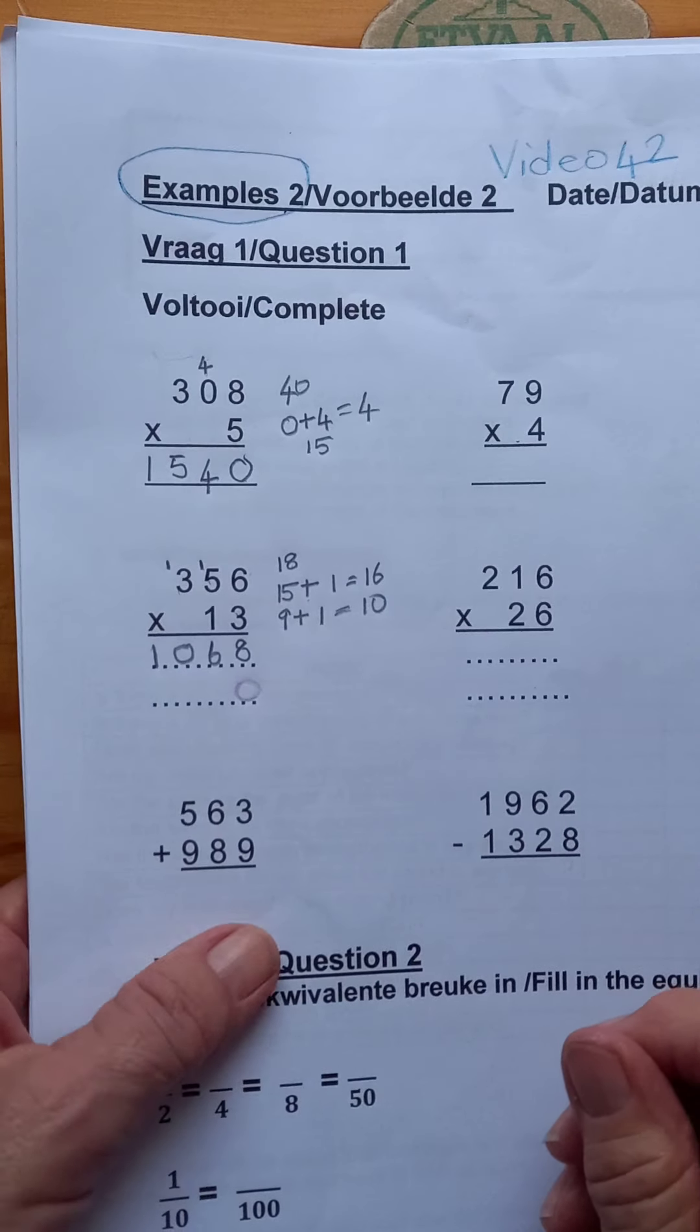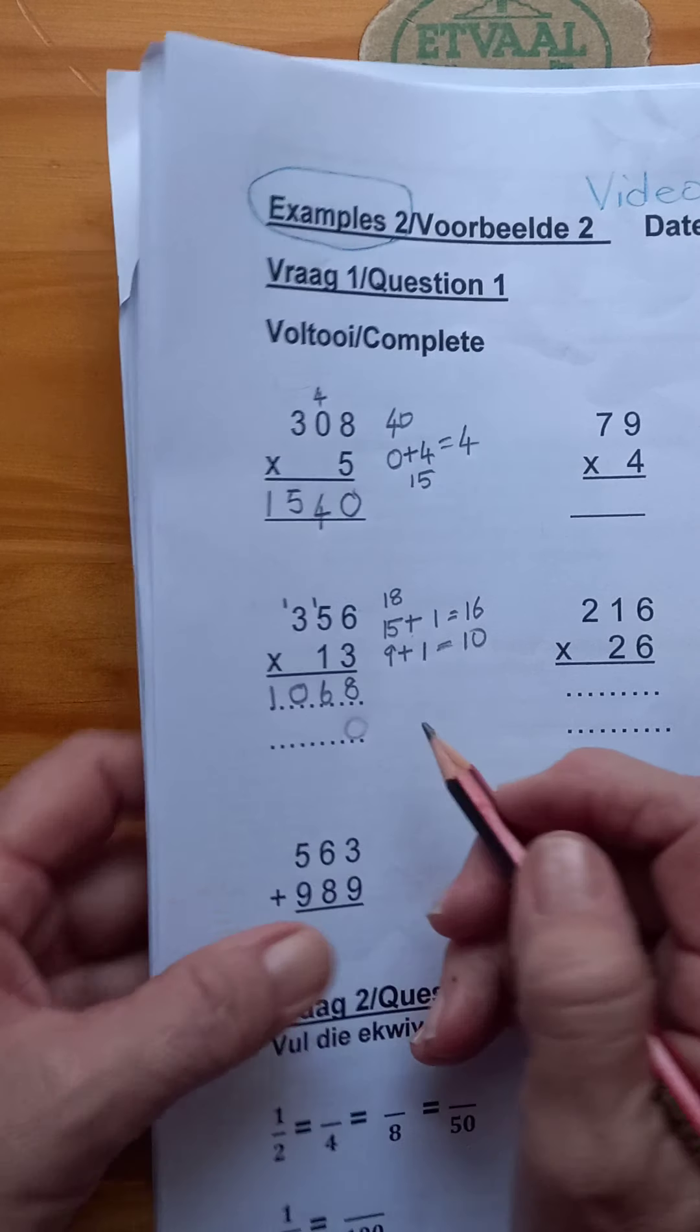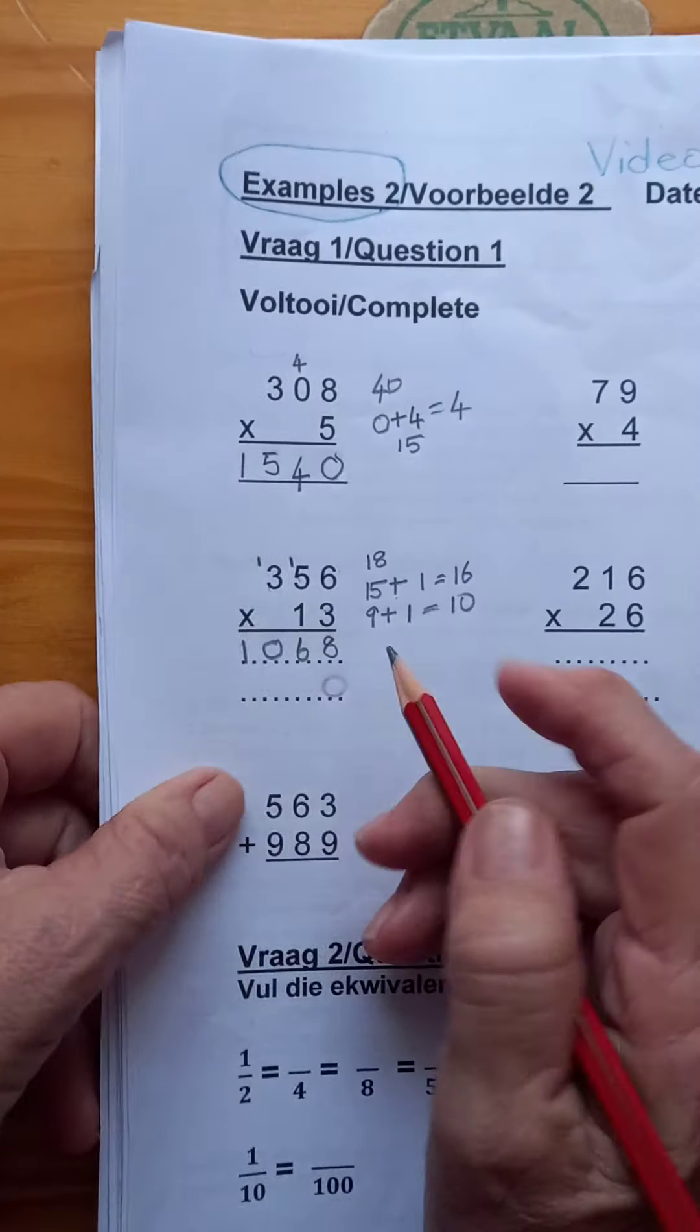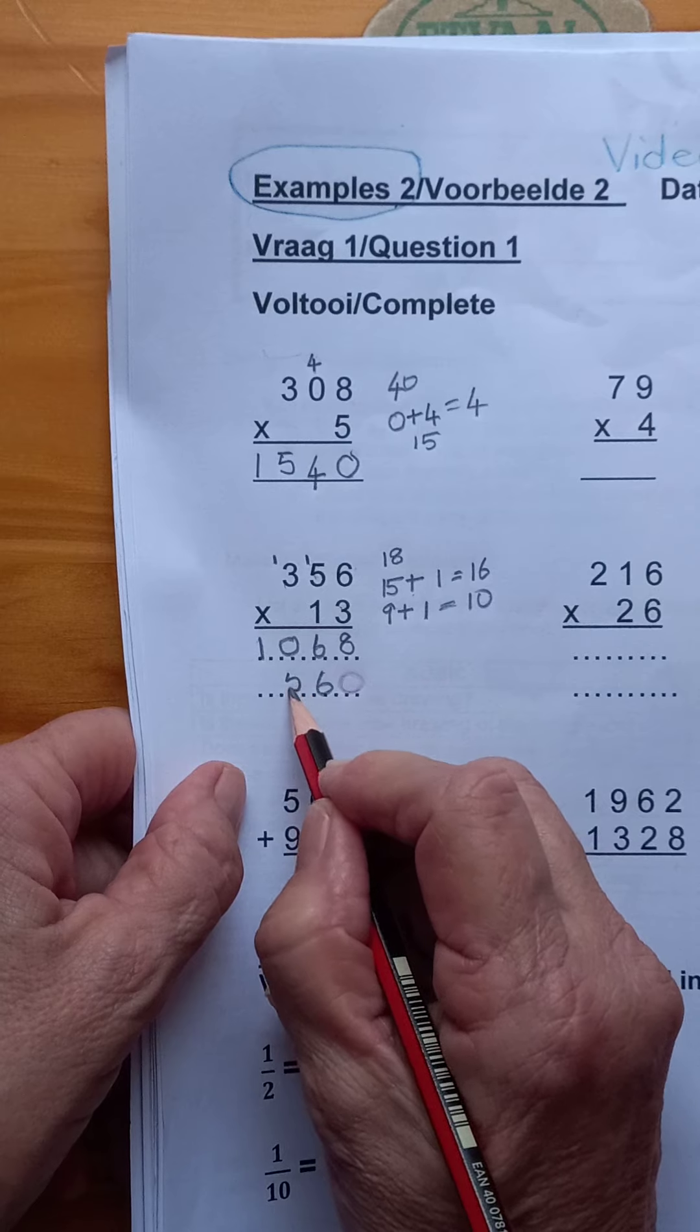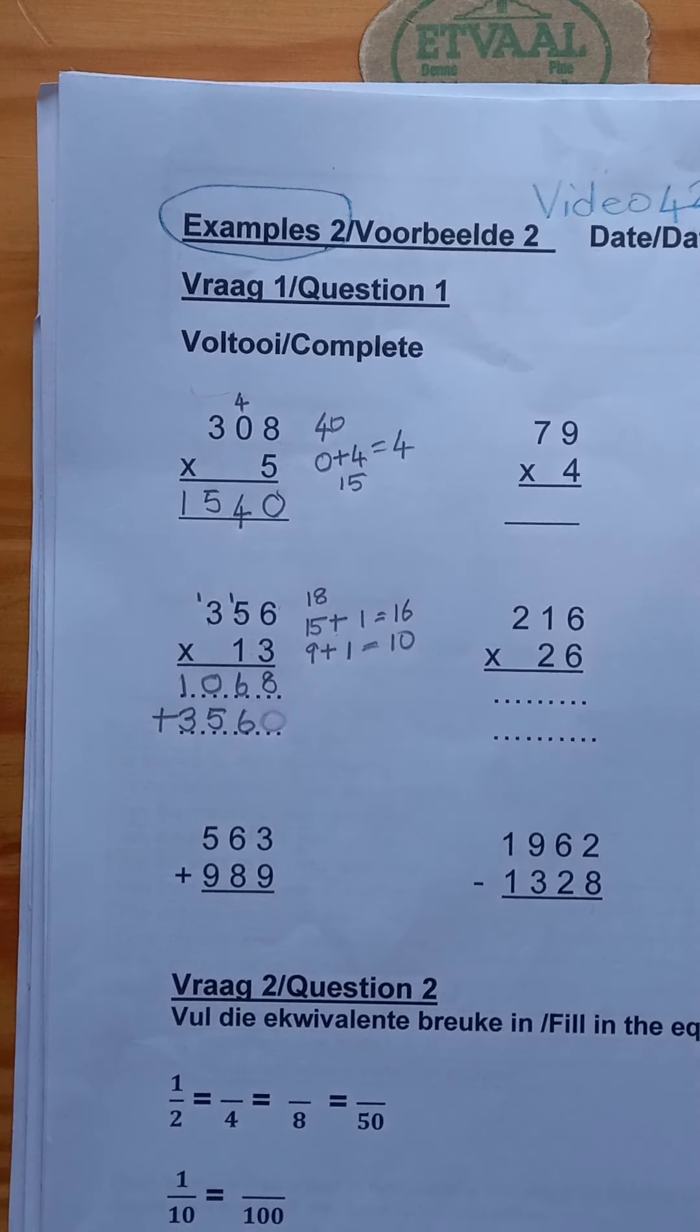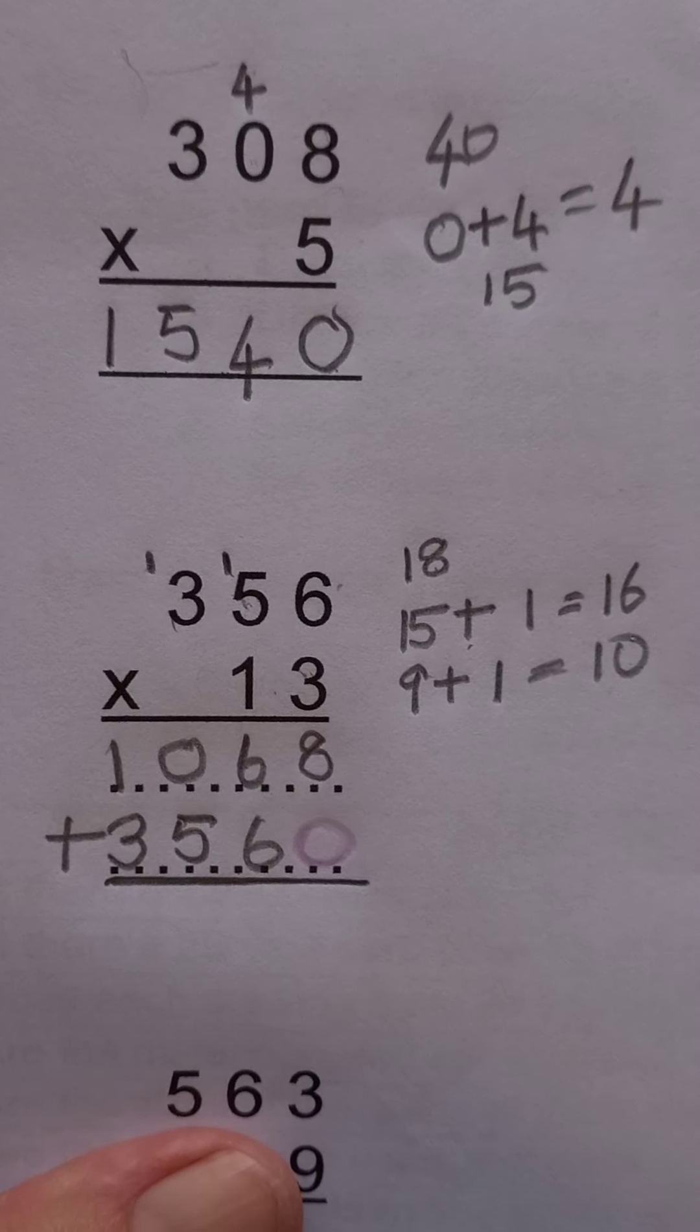Can you understand why we've done all these sums, times 1 and times 10 and times 100? There are reasons for the things we do. Now, luckily, when you multiply by 1 it's quite easy. 1 times 6 is 6, 1 times 5 is 5, and 1 times 3 is 3. Then you must add those up, so you rule off there.